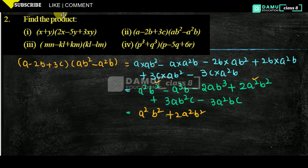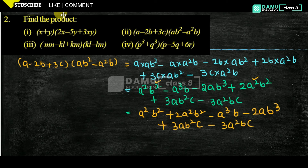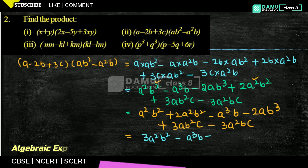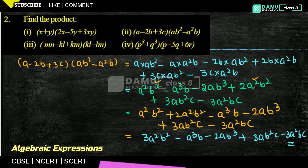Then a³b — is there any other a³b? No. Then ab³, is there any other ab³? No. So: a²b² plus 2a²b² will become 3a²b², then minus a³b, minus 2ab³, plus 3ab²c minus 3a²bc. So that is the answer. Thank you for watching, please subscribe.